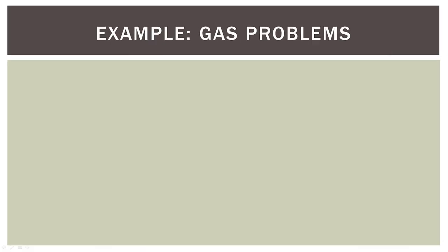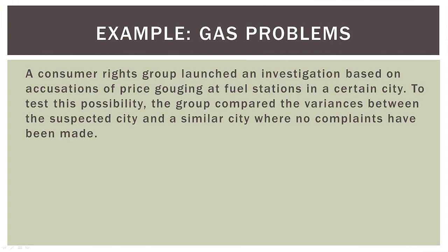So example two, gas problems. So a consumer rights group launched an investigation based on accusations of price gouging at fuel stations in a certain city. To test this possibility, the group compared the variances between the suspected city, and a similar city where no complaints have been made.